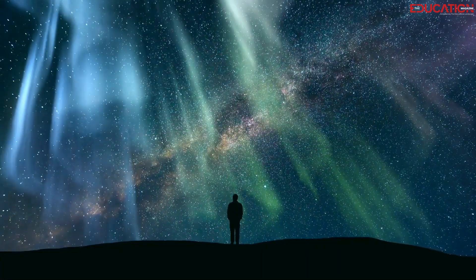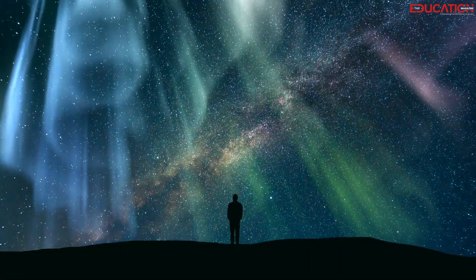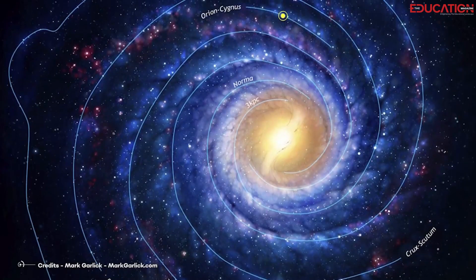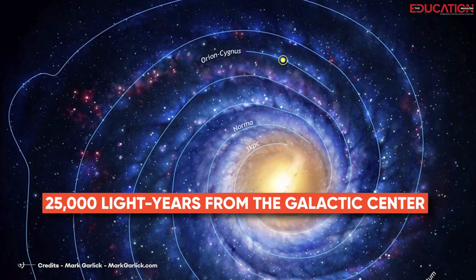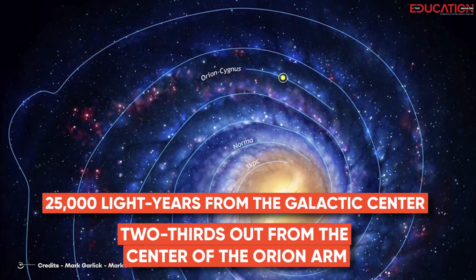The measurements made so far have given us a good understanding of where we are in the universe. We know that we are located in a spiral galaxy, about 25,000 light-years from the galactic center and two-thirds out from the center of the Orion Arm.